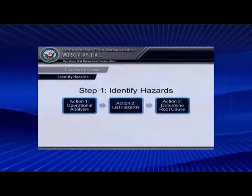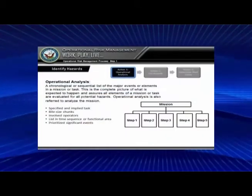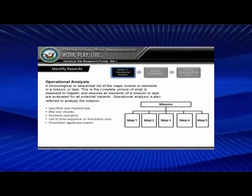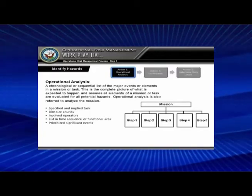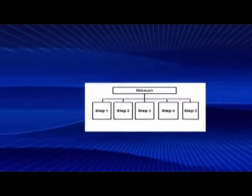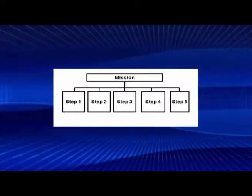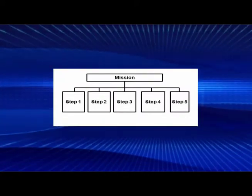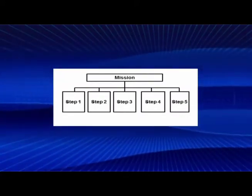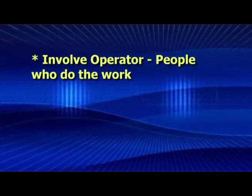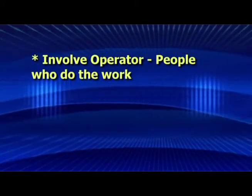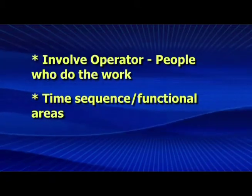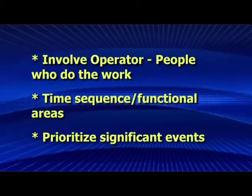For identifying hazards, the first thing we want to do is the operational analysis. We want to take a look at what our mission is, and then take that mission and break it down into bite-sized chunks so that we can accurately identify the hazards associated with each step. Make sure you involve the operators — the people actually doing the task — and your subject matter experts. You want to list steps in sequence or functional areas, and prioritize the significant events.